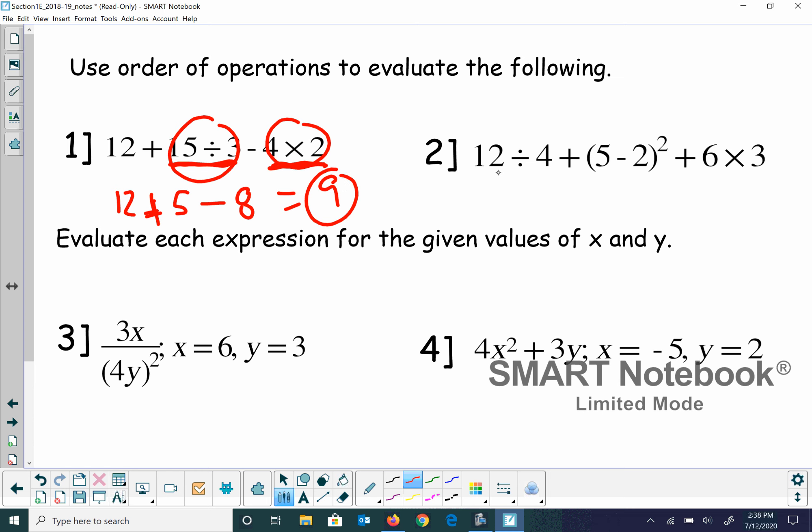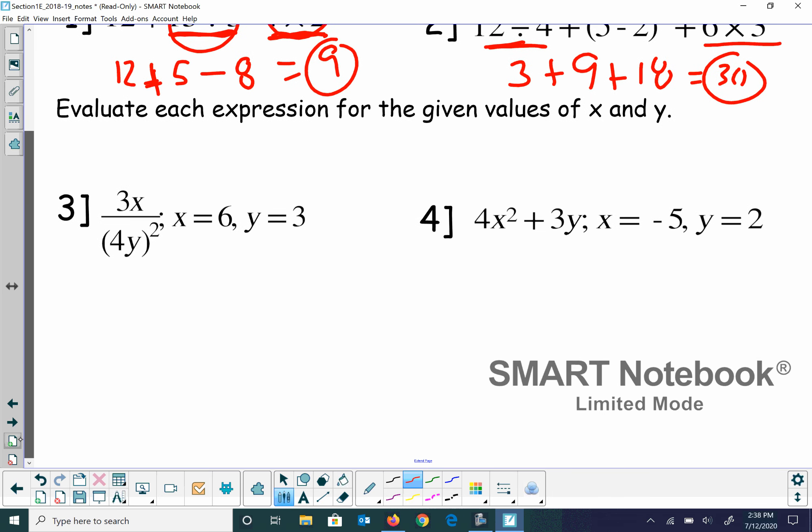Alright, next one. Again, we're going to read it left to right. So we could take care of this first. That's just going to give me 3. That plus is going to come down. 5 minus 2, we will do first, and then we'll square that. And the reason we take care of the 5 minus 2 is because in the parentheses, parentheses have a higher order. So 5 minus 2 is 3. 3 squared is 9. And then plus 6 times 3, which is 18.